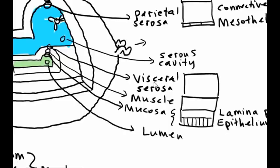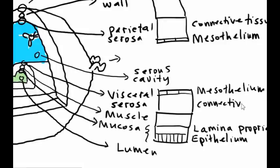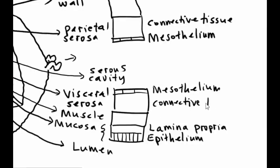And it's going to be really identical to the parietal serosa, which you would guess because they're continuous with one another, only it's flipped around facing the serous cavity from the other side. So the epithelium faces outward. And again, that's called mesothelium. And connective tissue next to that.